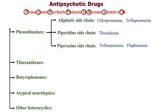The example for Thioxanthines is flupentixol. Note that thioxanthine drugs contain 'thiox' in their name — flupentixol is the key example to remember for this category.